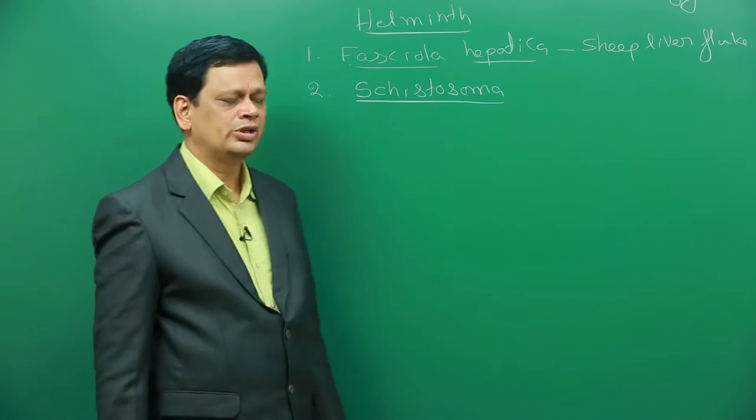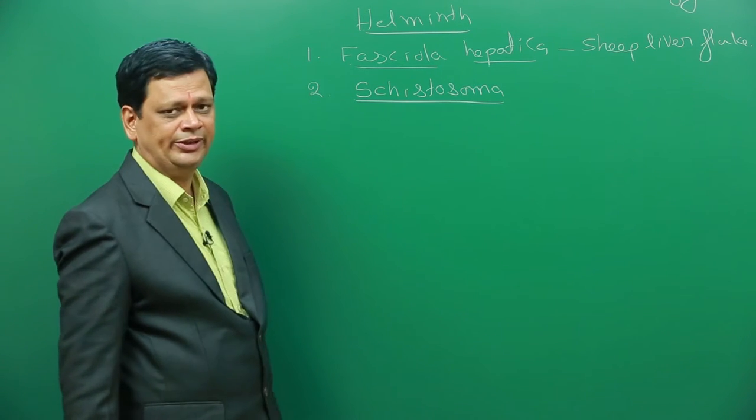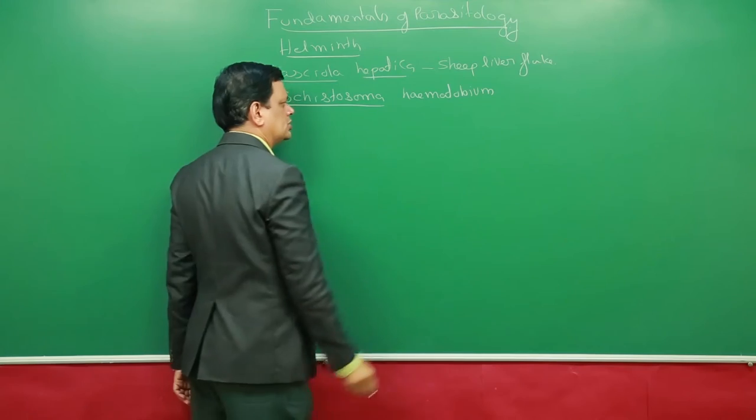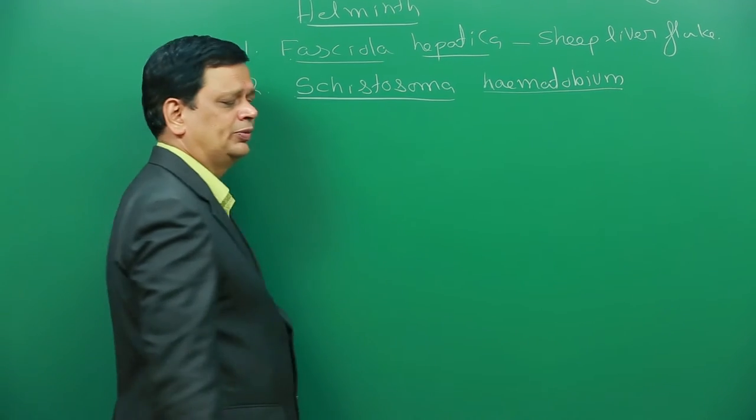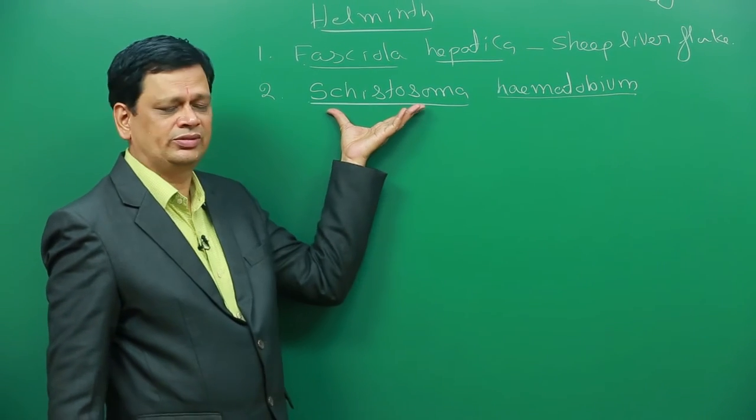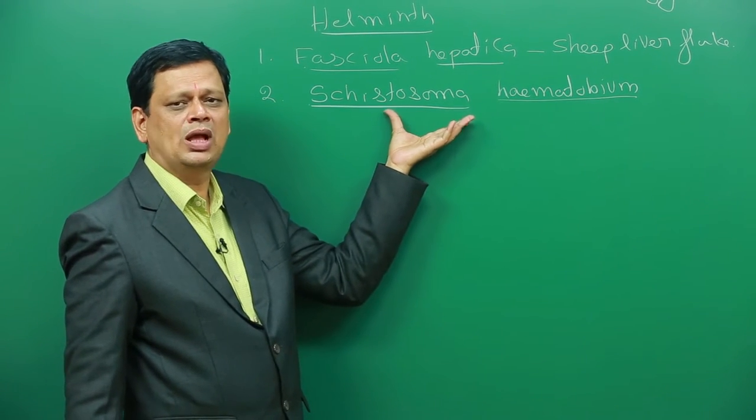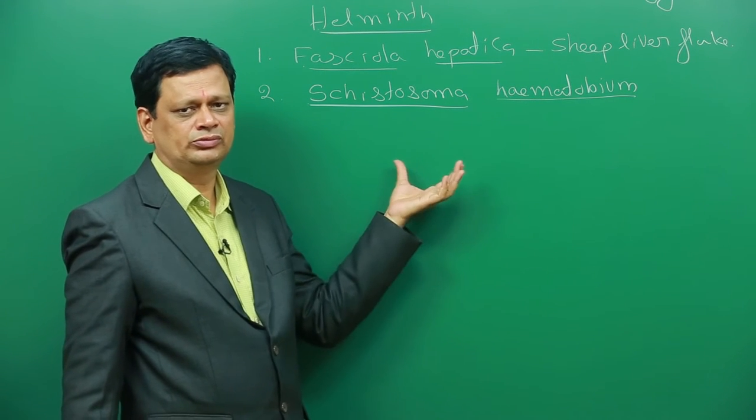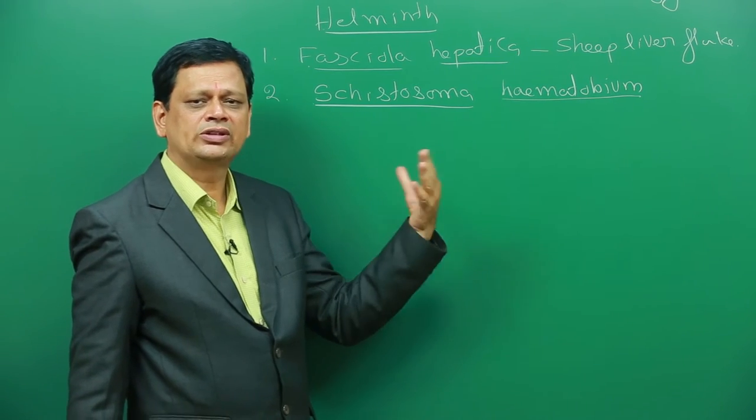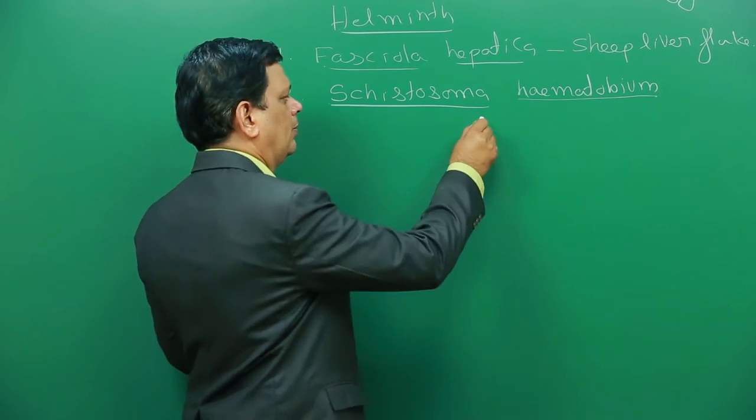Second one, Schistosoma. Schistosoma is a genus name. In this, Schistosoma hematobium. There are other species also in the same genus. Schistosoma mansoni, Schistosoma japonicum. Schistosoma mansoni and Schistosoma japonicum.